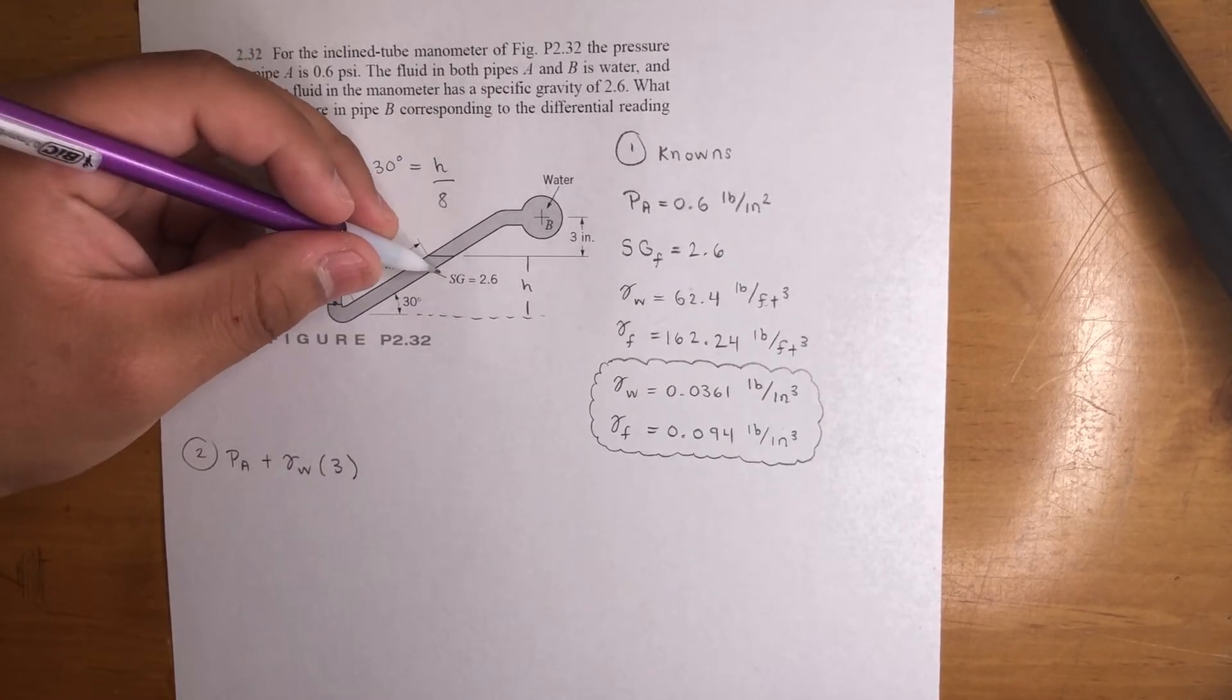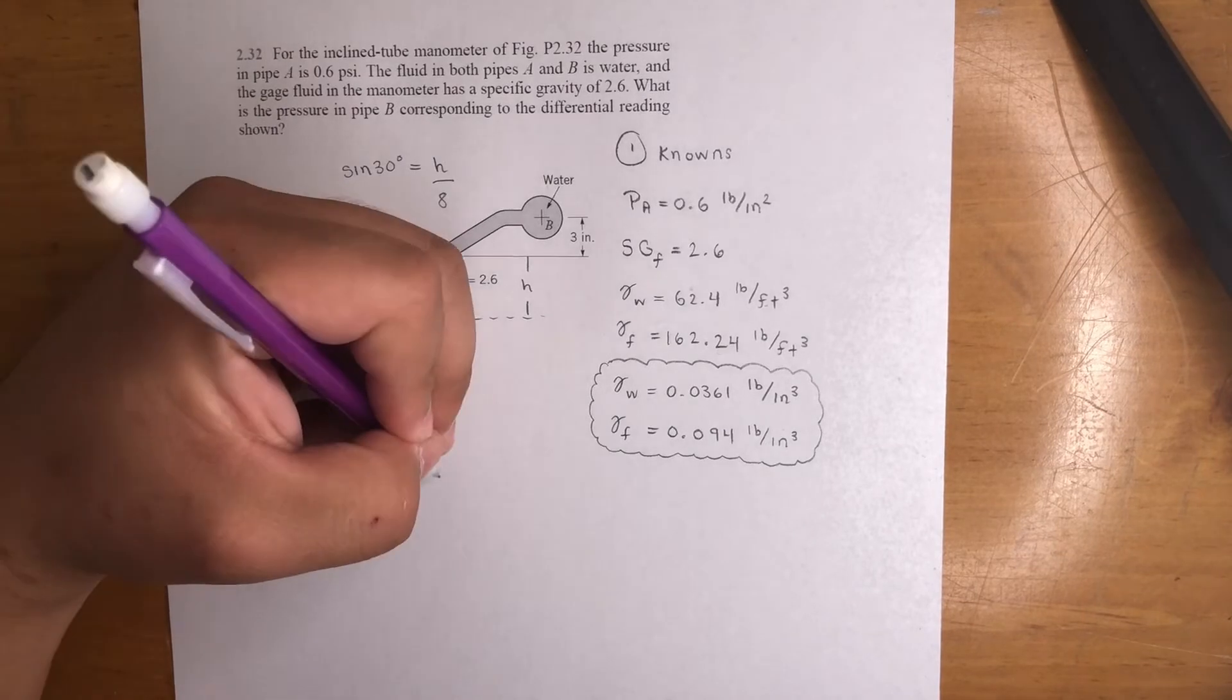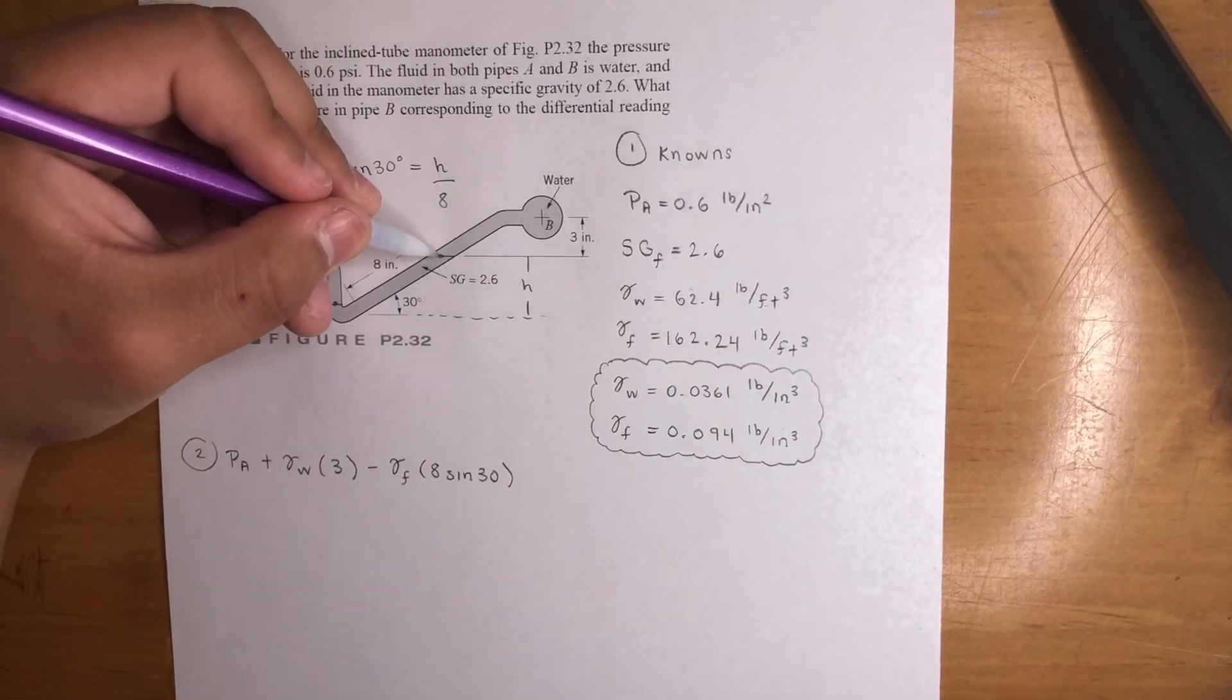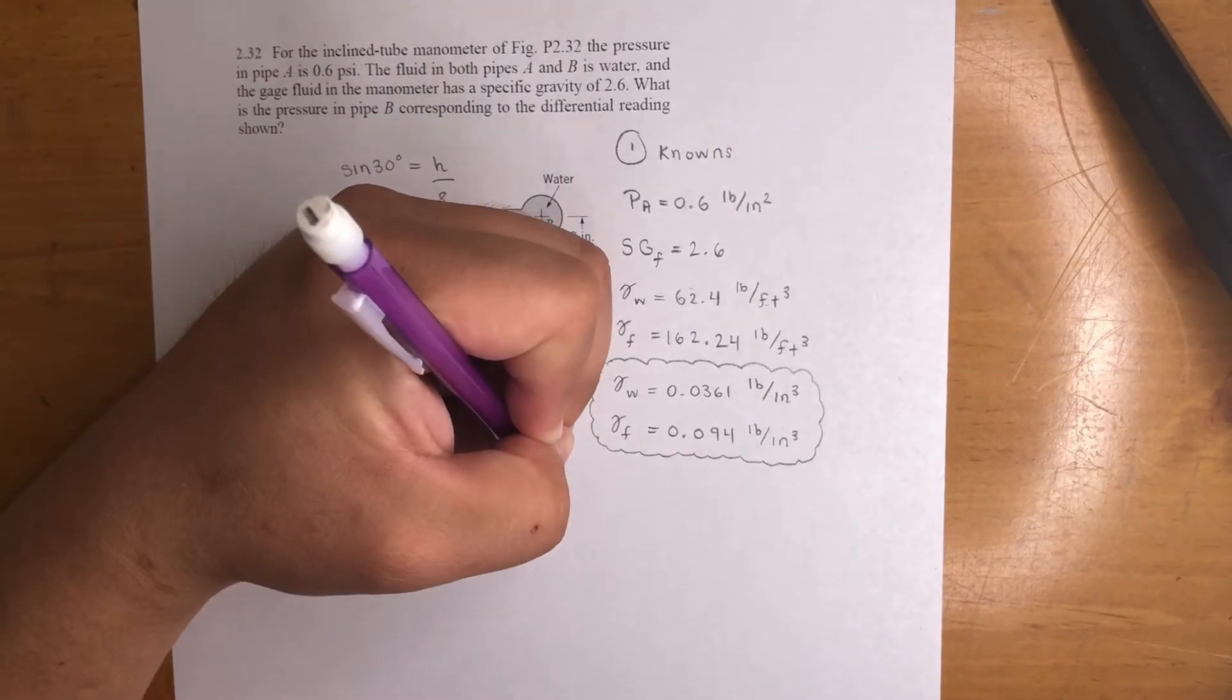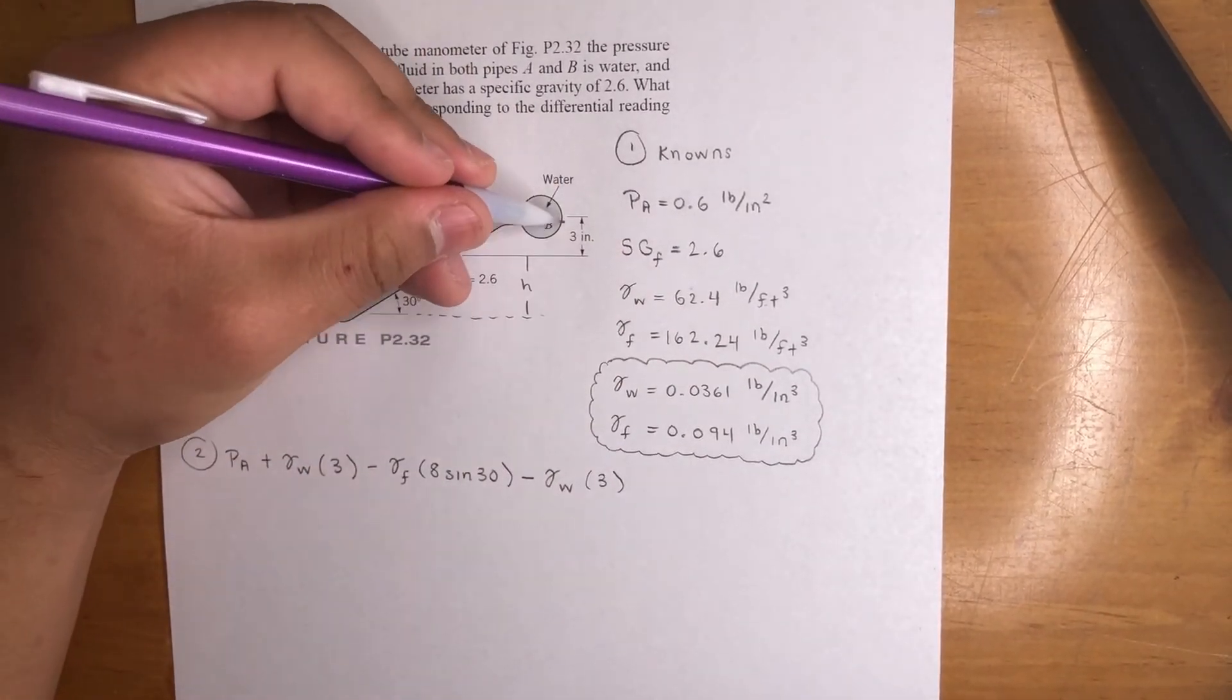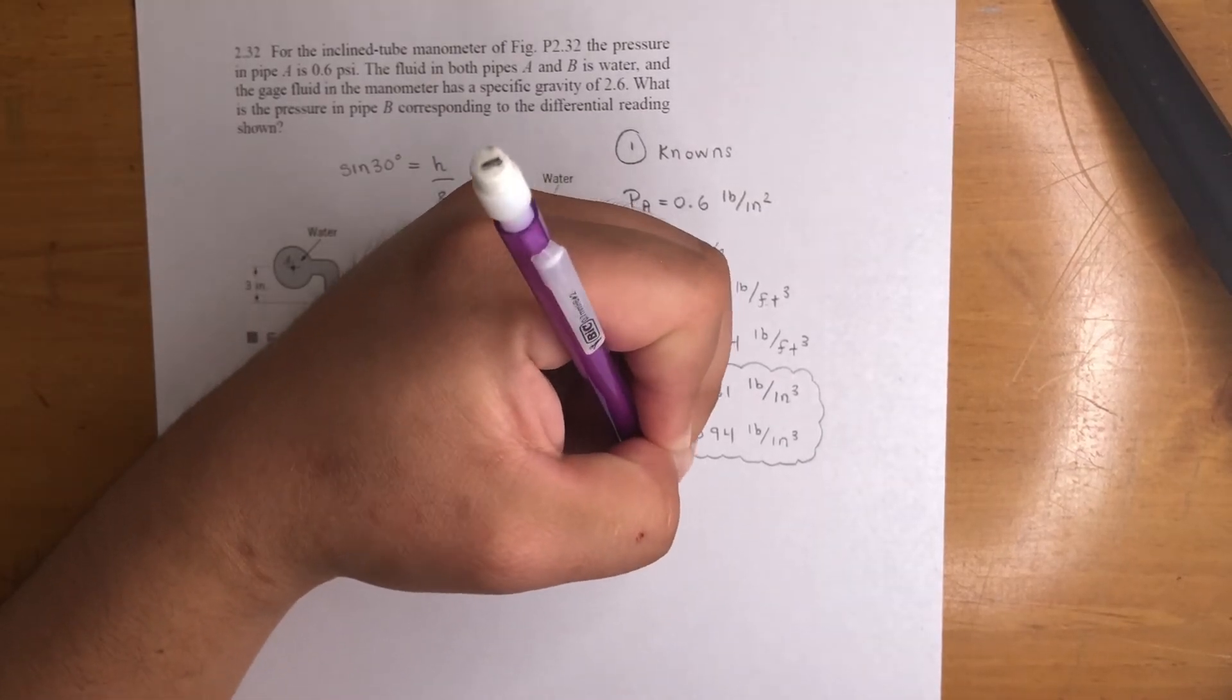Now we're going up again, and this is fluid right here. So we're going up, that's a negative. Negative gamma of the fluid, right, times your height, which is eight sine 30. Now we're going from this point to this point. We're going up again, so that is a negative. We're dealing with water now. Your height here they gave it to us, three inches. So cool. Again, you want vertical heights, not this distance right here. You want the up and down. And then we arrive at point B, pressure at point B.